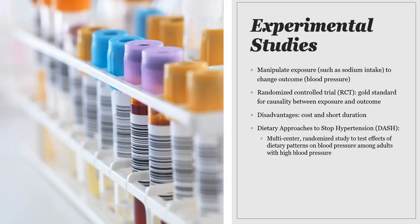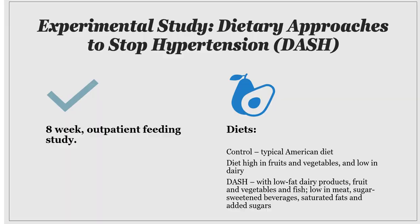Experimental studies are the most powerful study we can do. We have two variables and we can manipulate one variable but not for another group. For example, in an eight-week outpatient feeding study, the control would be the typical American diet, and the variable we manipulate would be the diet. This lets us determine whether diet has an effect on hypertension. Numerous studies have shown that diets high in fruits and vegetables, low in dairy and meat, and certainly low in sodium have a direct causal relationship with hypertension.